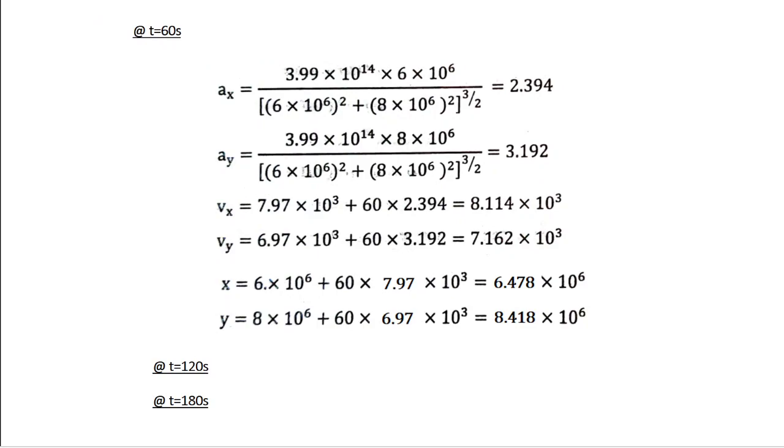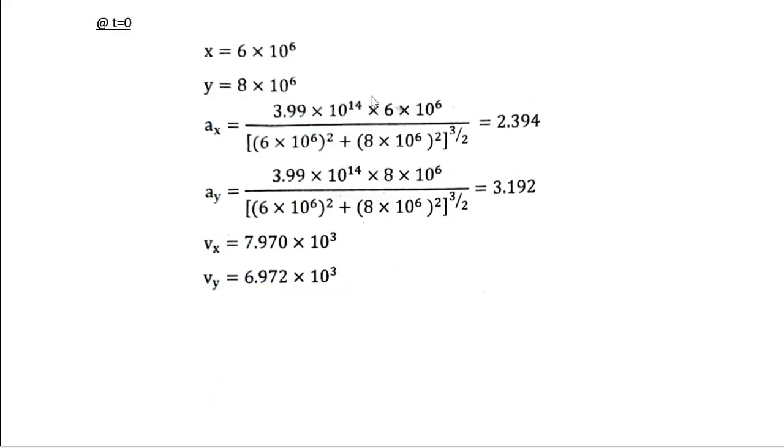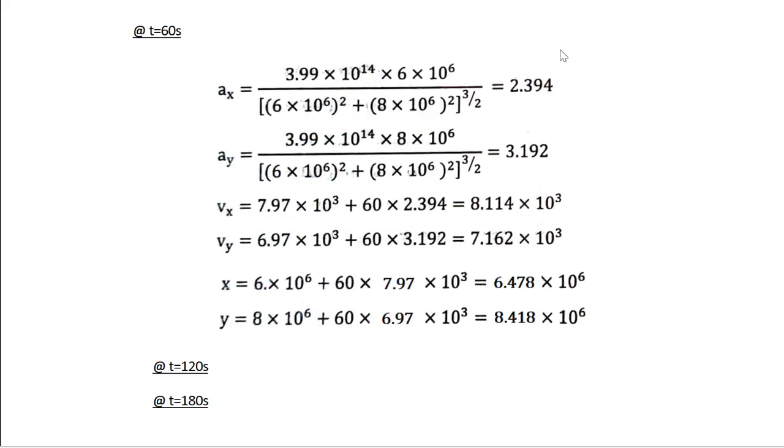Next, at time t = 60s, Ax is given by GM×x/(x² + y²)^(3/2). Remember, always you have to take values from the previous interval. So x and y have the same value as at time t = 0. So when you substitute, you get the same values for Ax, Ay. So Ax and Ay don't change.